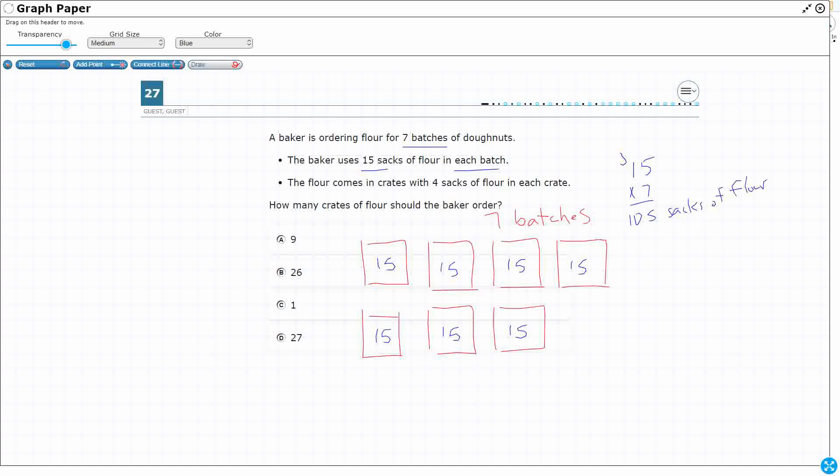Now, the flour comes in crates with four sacks in each crate. Wow, little crates. So what I need to do is take my 105 sacks of flour and put them into crates of four.